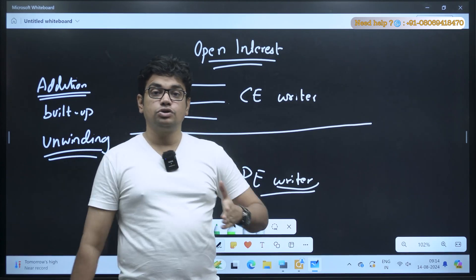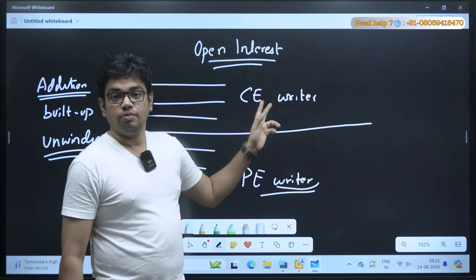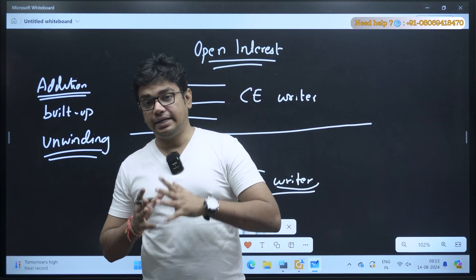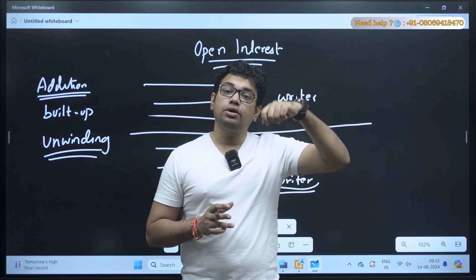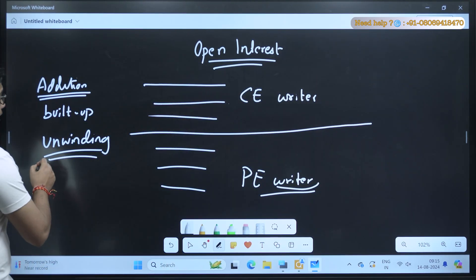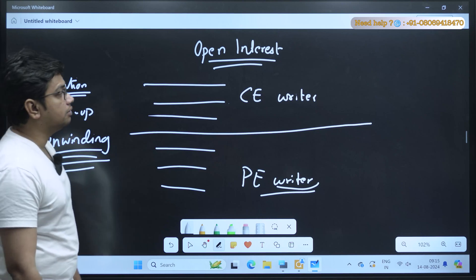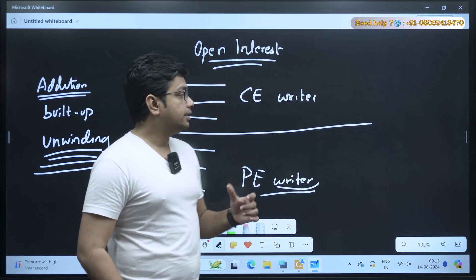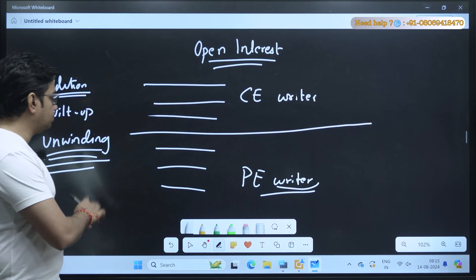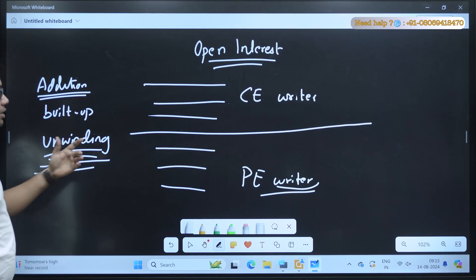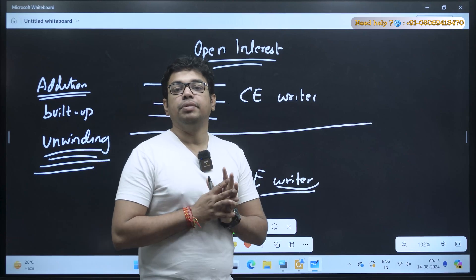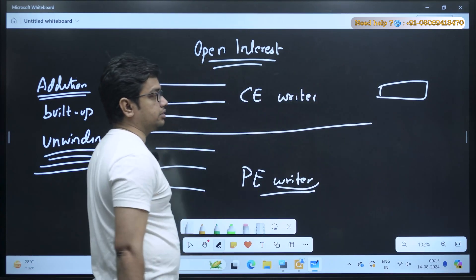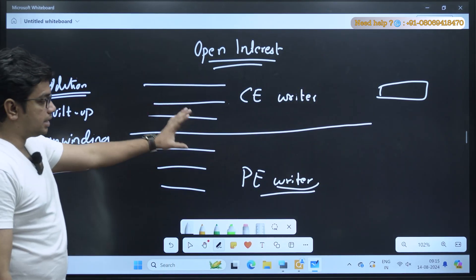Also, when price breaches a level, we should look at the writer's point of view. When writers think the stock might go beyond a level, they begin unwinding their position — exiting whatever profit or loss they are making. You can see there will be like blank spaces in the data. The same thing happens with put writers as well.